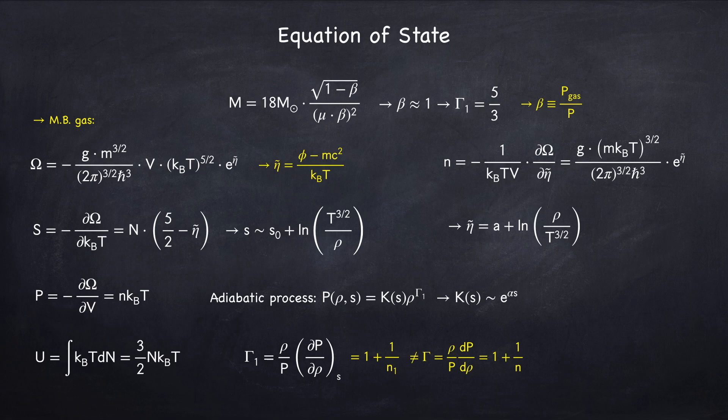The difference between gamma and gamma 1 is that gamma does not assume no heat flow. Gamma is a total derivative of p with respect to rho.